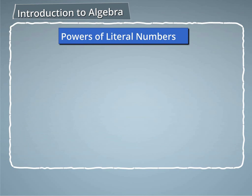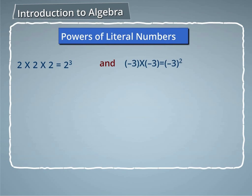Powers of literal numbers. We have read earlier that 2 into 2 into 2 is equal to 2 raised to the power 3, and minus 3 into minus 3 is equal to minus 3 raised to the power 2.